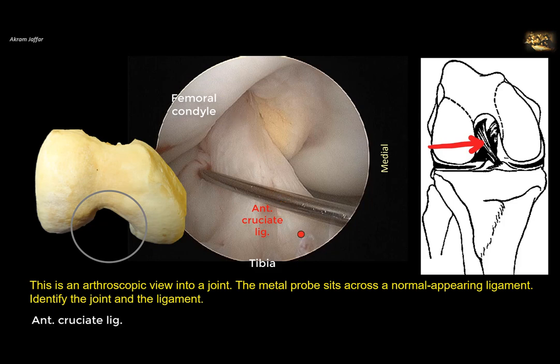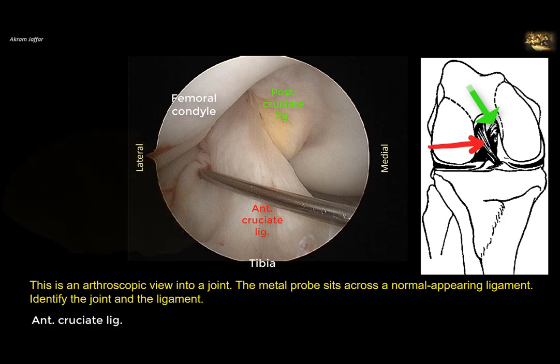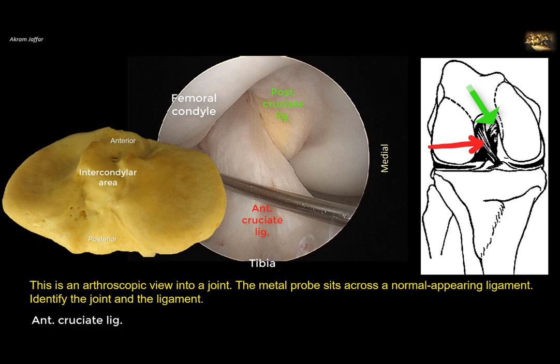The anterior cruciate ligament passes from the anterior aspect of the tibial plateau toward the lateral side. Coming from the posterior side toward the anterior and toward the medial condyle is the posterior cruciate ligament. They cross each other like a cross — that's why they are called the cruciate ligaments. They are named anterior and posterior according to their attachment to the tibia, not the femur: the anterior attaches to the anterior intercondylar area, and the posterior to the posterior intercondylar area of the tibia.